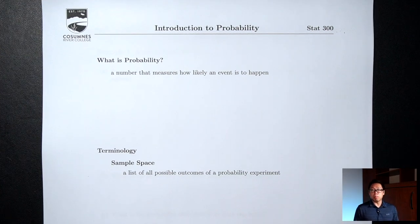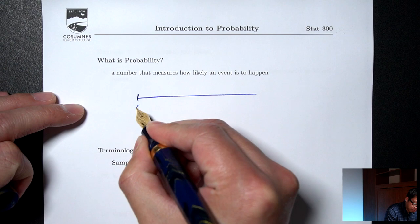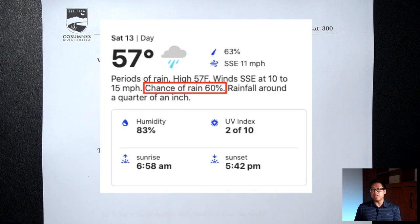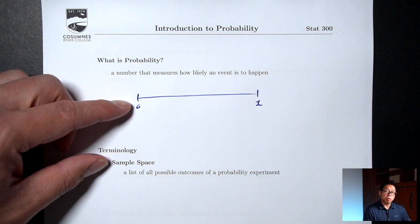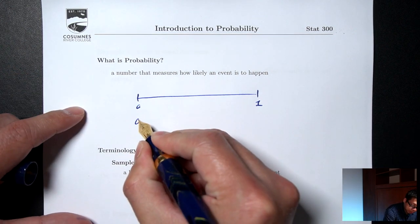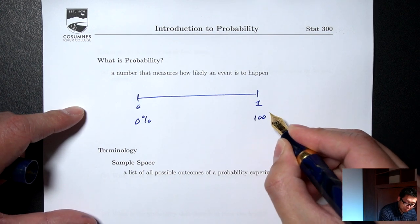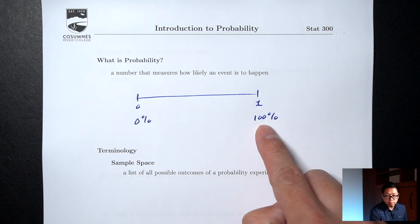What is probability? Probability is a number that measures how likely something is to happen. In particular, it's a number between 0 and 1. We're also familiar with probability as a percent — when you look up the weather, you'll see things like the chance of rain today is 60%. That 60% is a probability. So probability is a number between 0 and 1 as a decimal, or 0% to 100% as a percent.